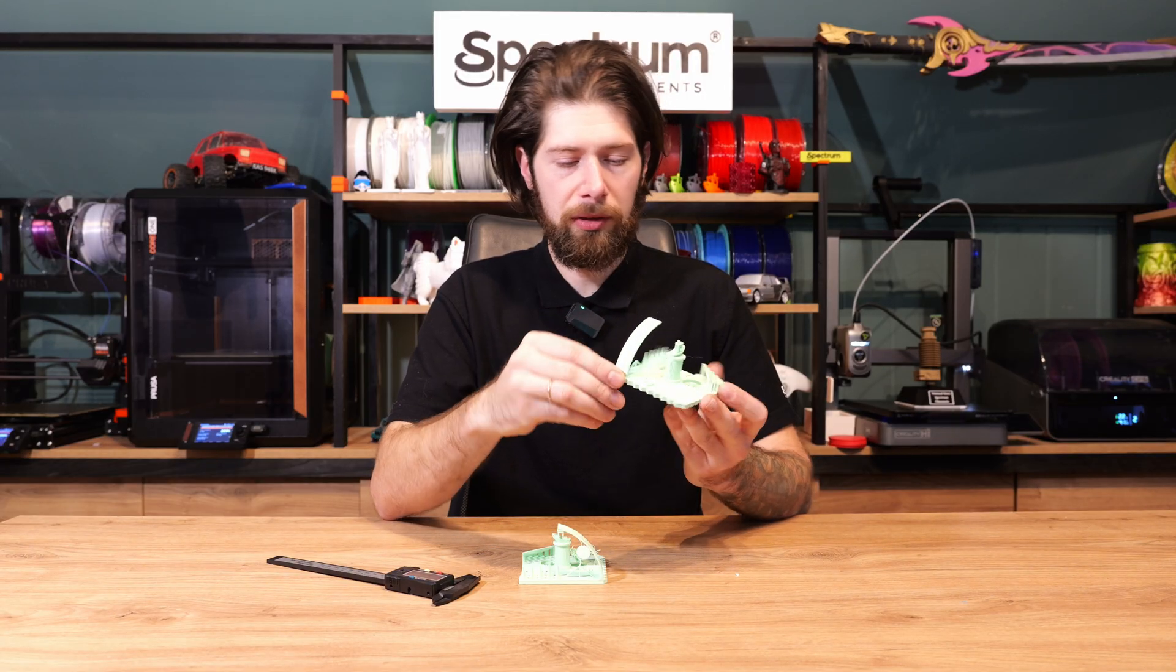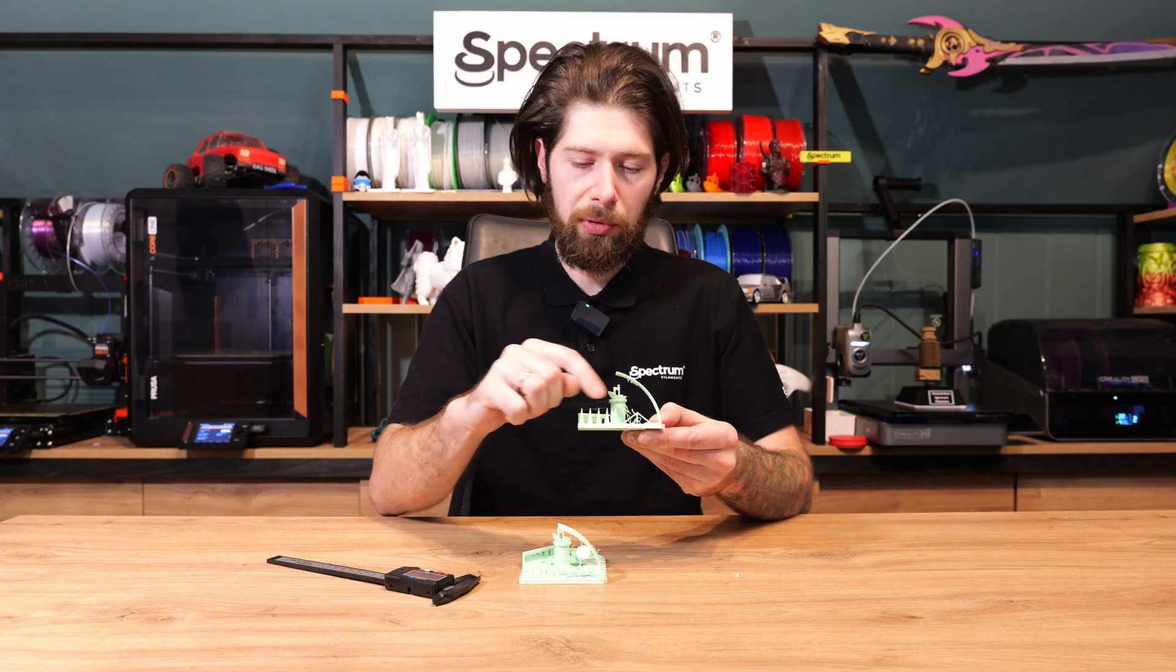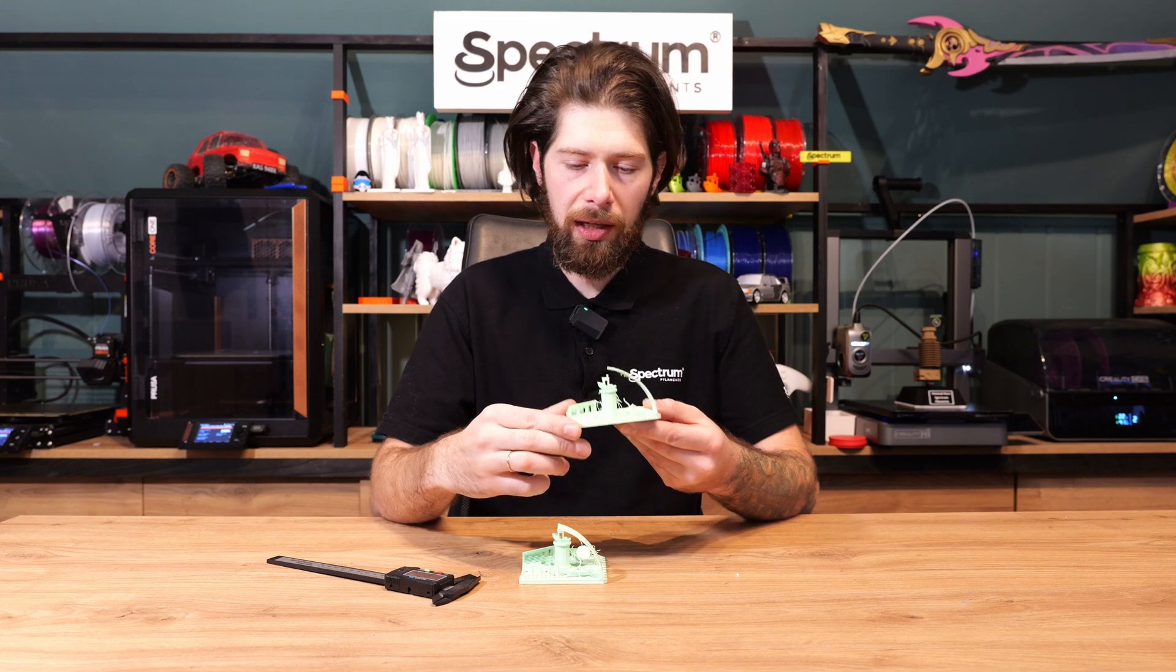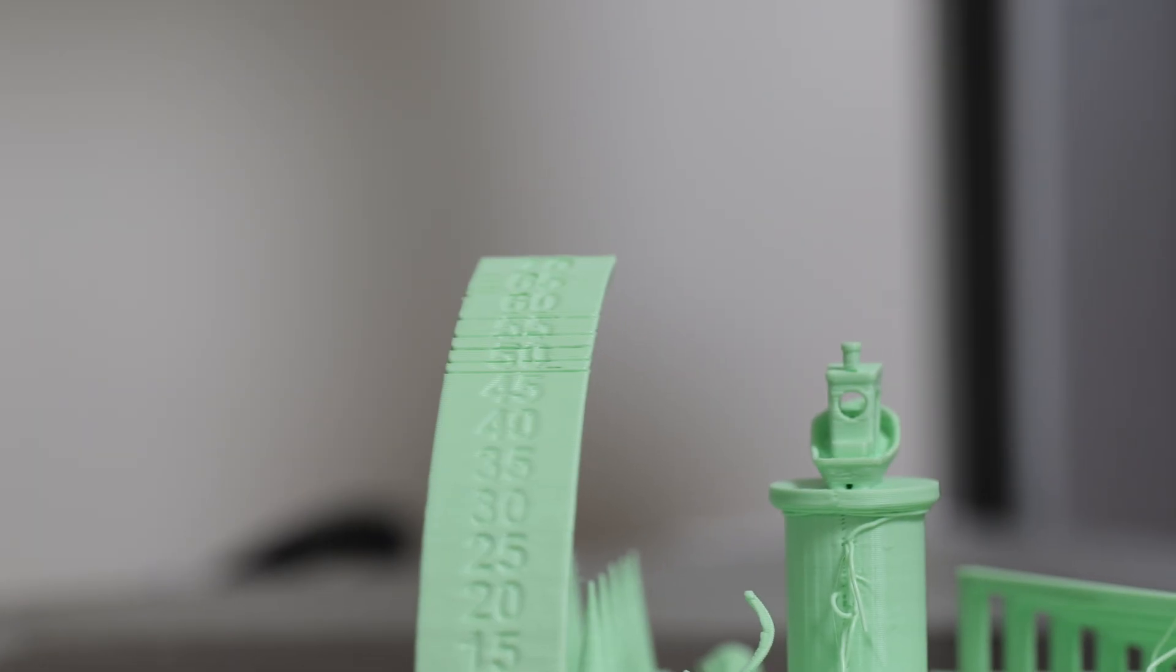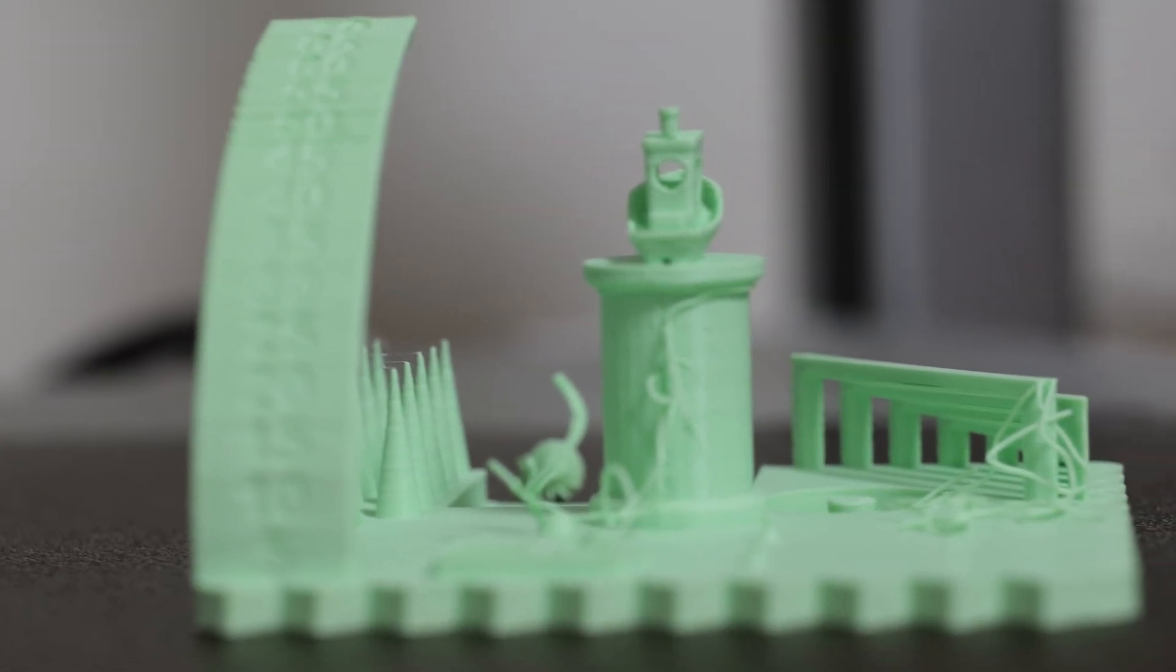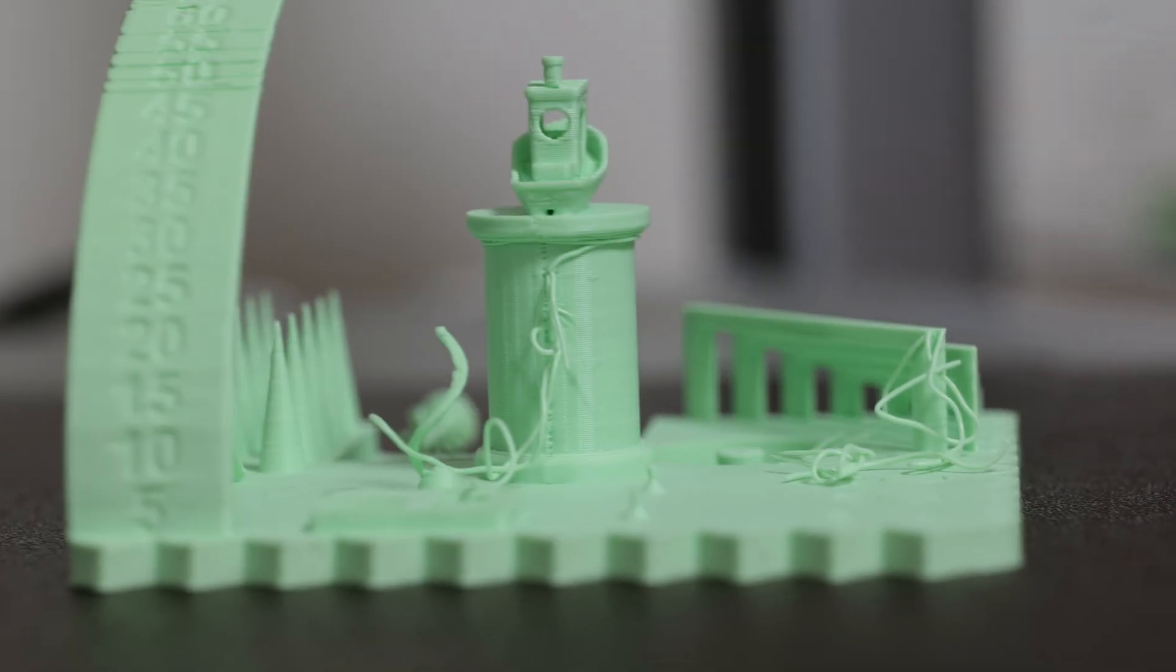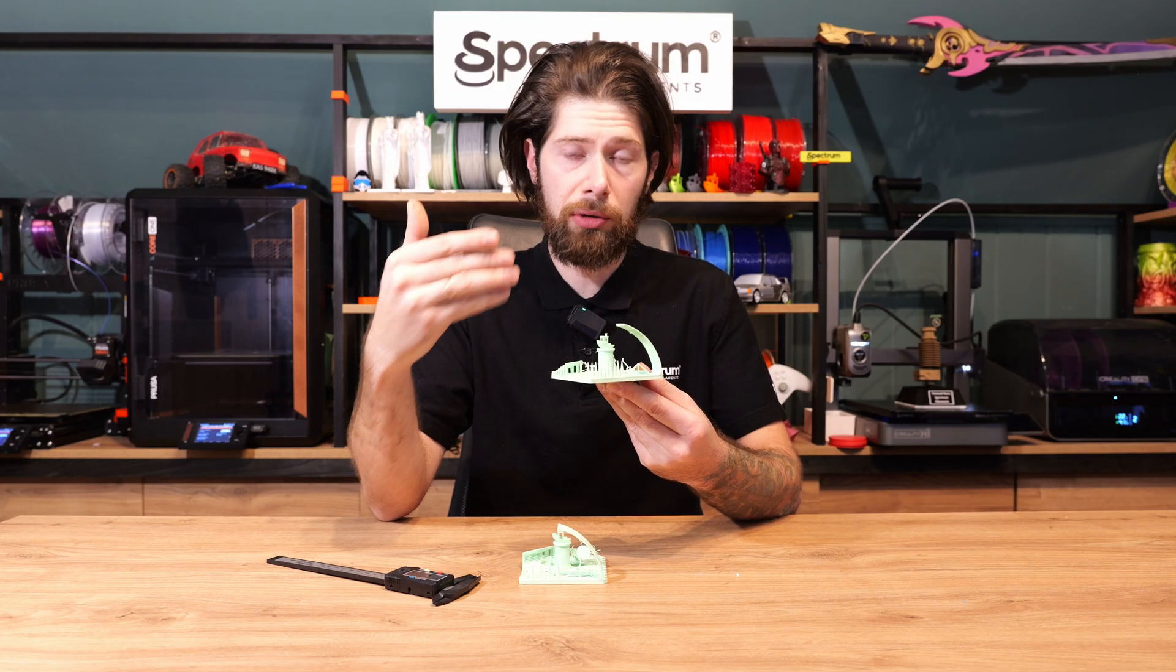Next we need to see the retraction test which are those 10 small pointy things and between them on the top we should see small stringing and there is some stringing but it's minimal. It's like five strings, maybe six strings visible which means that retraction is pretty good so we don't need to adjust retraction.